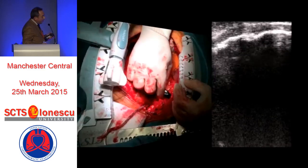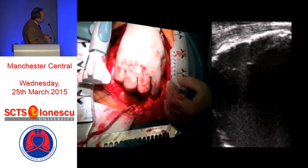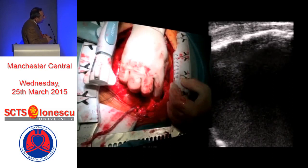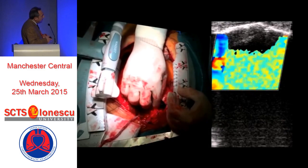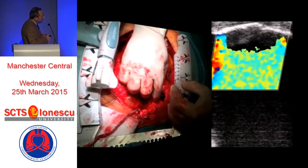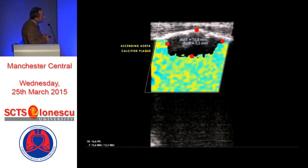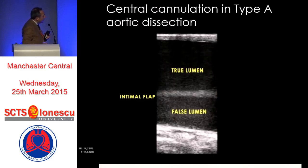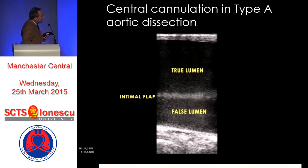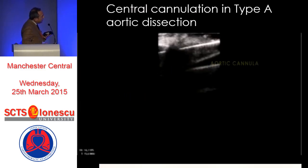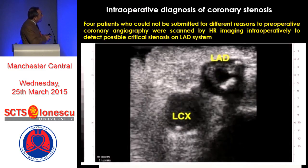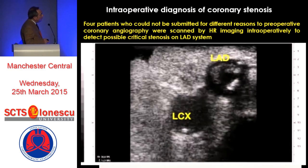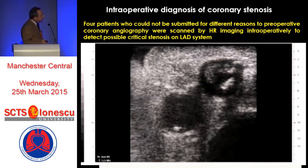We can also perform epiaortic scanning. Here is a very large, partially calcified plaque on the aorta, and with color flow it is possible to depict the internal surface of the artery. We were able to measure the width of the plaque and changed our procedure accordingly. In one case of aortic dissection, we used this technique to cannulate the true lumen as a central cannulation.